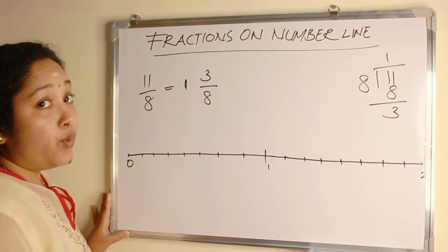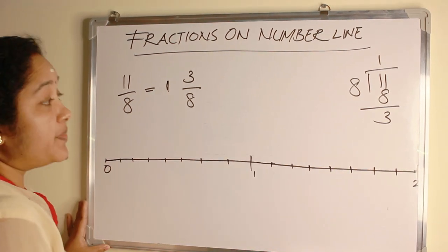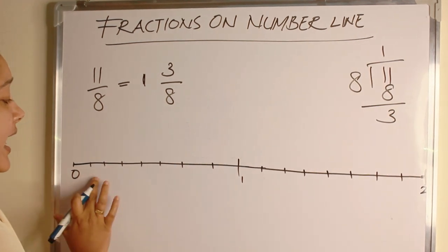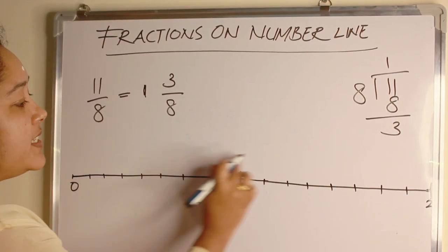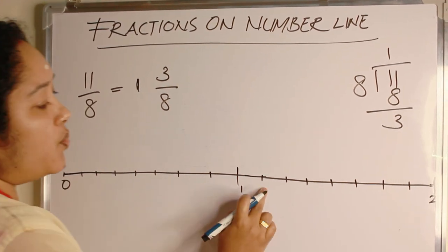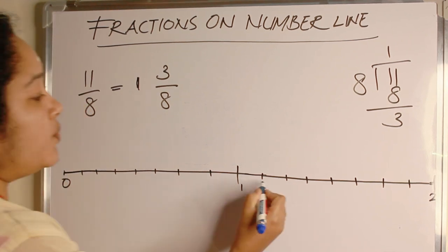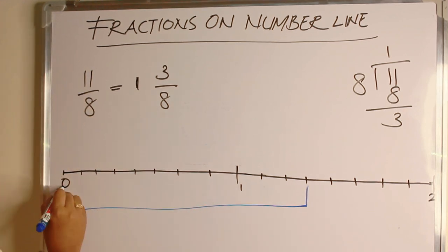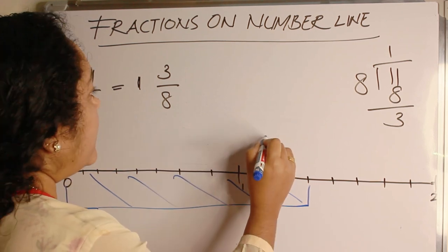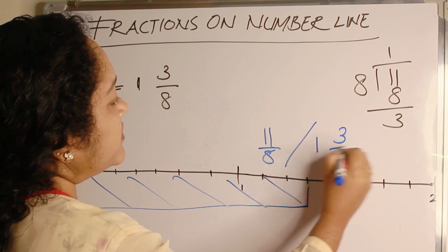1 is the whole unit. The denominator is 8. So 1 unit is divided into 8 equal parts. 1 unit is over. Then move to the numerator 1, 2 and 3. The shaded portion is 11 by 8 or 1 and 3 by 8.